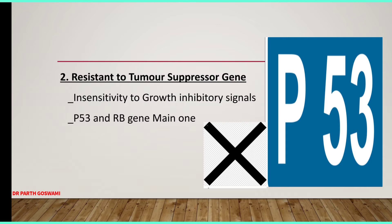If you have a p53 mutation, you can develop cancer because your tumor suppressor gene is not working. I have already made videos regarding p53 and the RB gene. If you want to see the video regarding tumor suppressor genes, check the playlist.